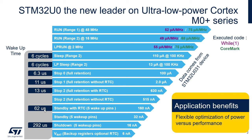Wake-up time from Standby is 62 µs. We also have Shutdown mode, which is even lower than Standby, reaching 16 nA, though the wake-up time is much longer at 292 µs. Finally, we have VBAT — the lowest power mode available — which just powers the backup domain with backup registers and optionally the RTC. In this mode we can go down to 6 nA.